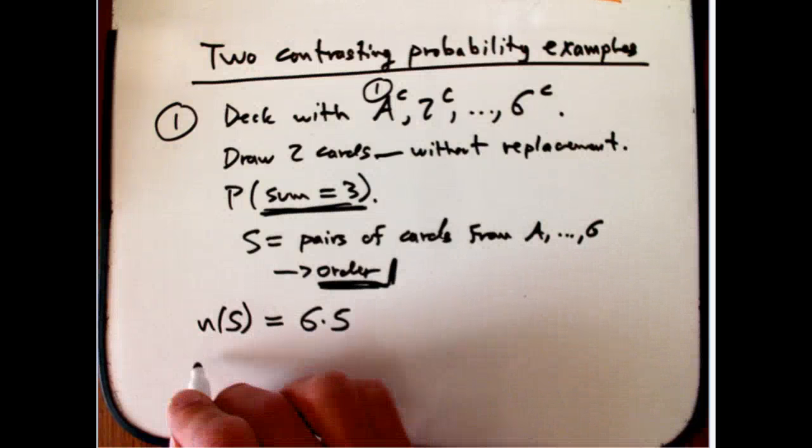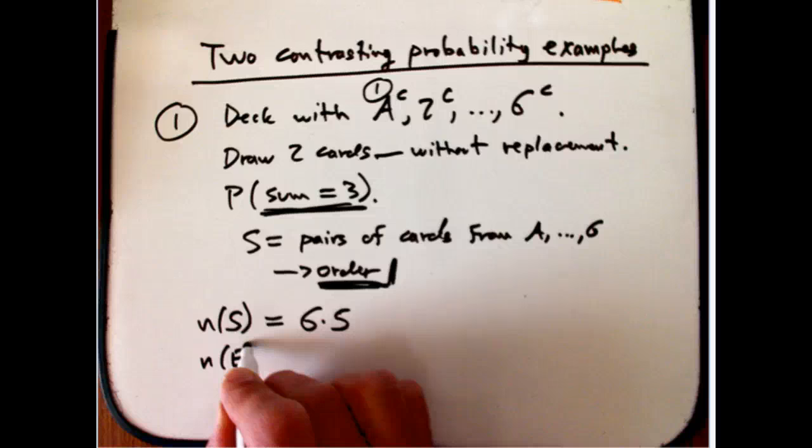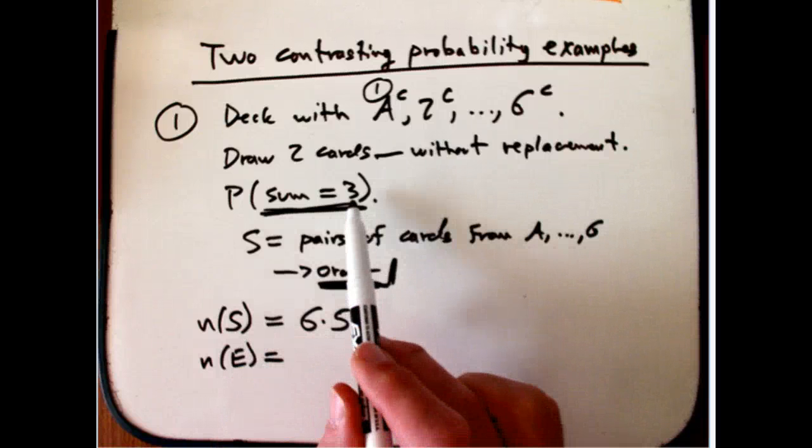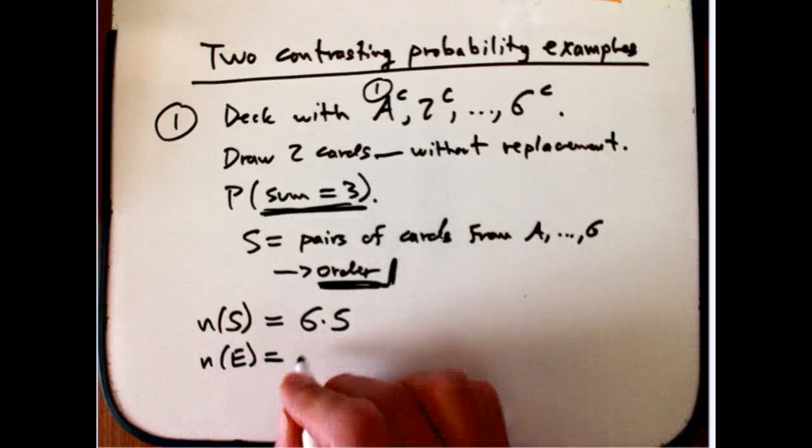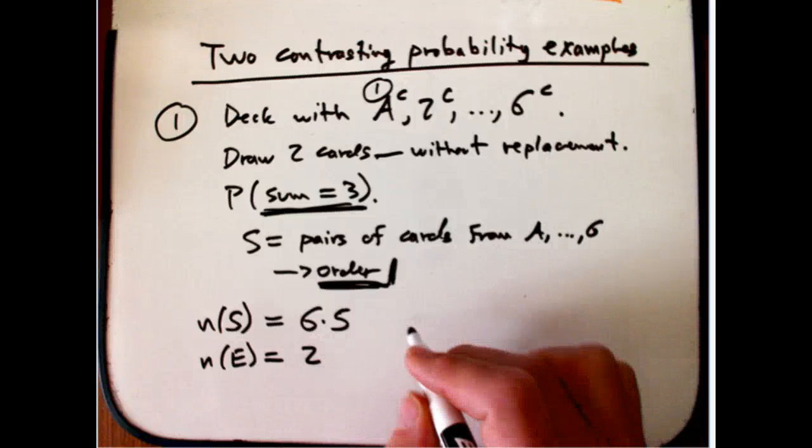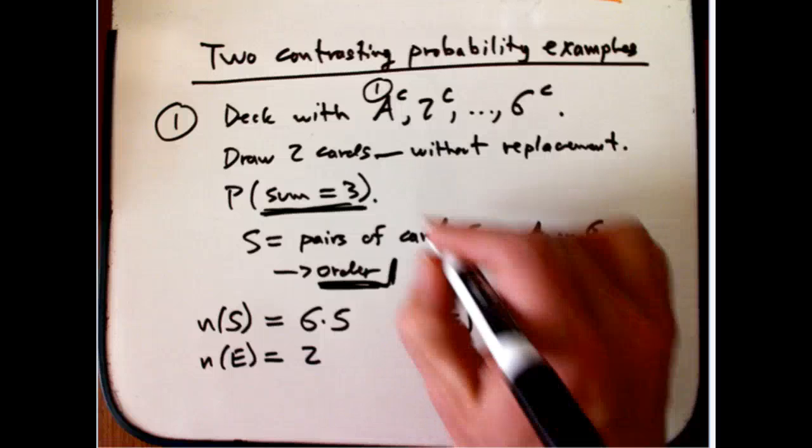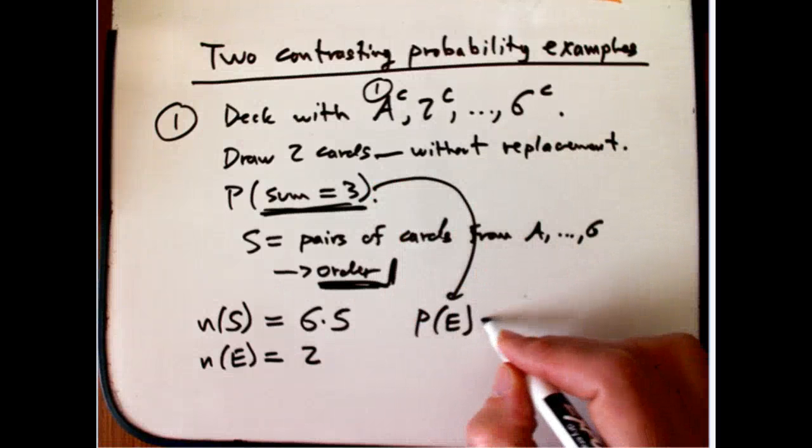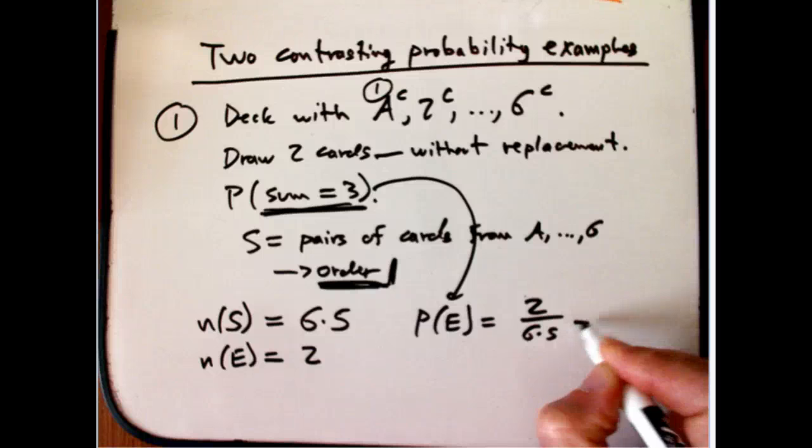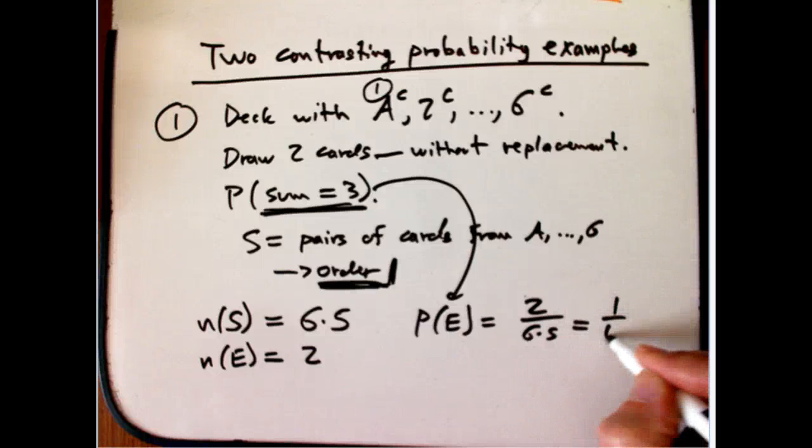And then the number of outcomes in the event that I want, well, as I said, the only ways to get this is ace, two, and two ace, that's two. And so the probability of that event, sum equals three, is going to be two over six times five, two over thirty, or one out of fifteen.